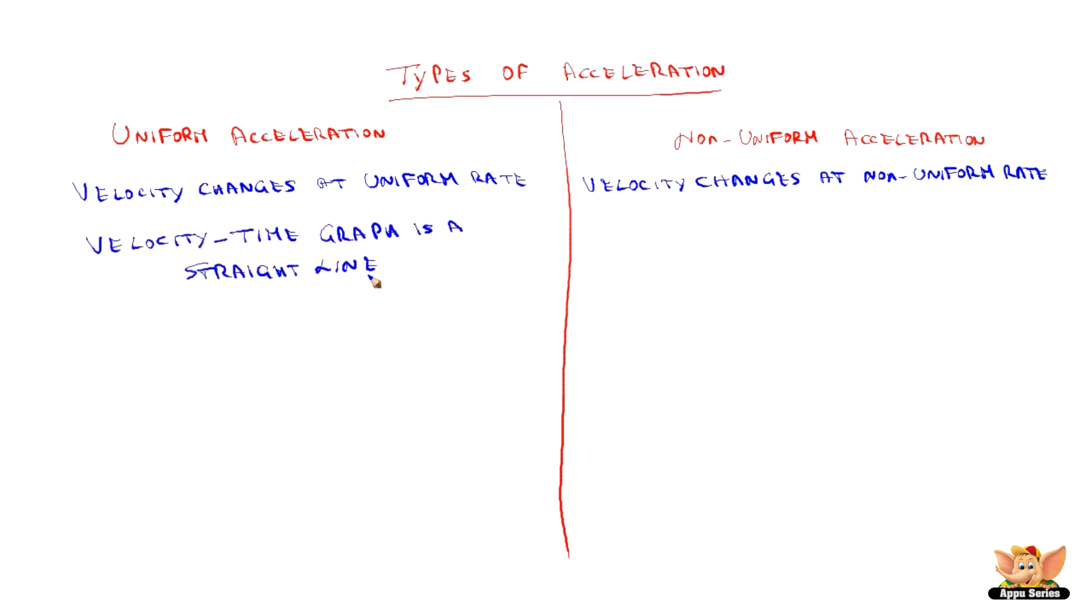When you draw a velocity-time graph for uniform acceleration, it is a straight line because the change in velocity is the same in equal intervals of time.